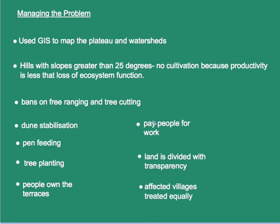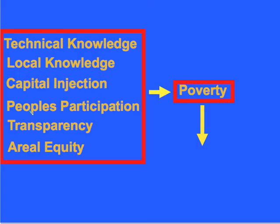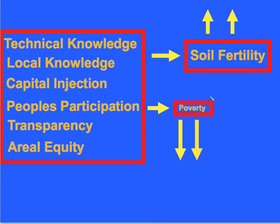Several principles of good environmental management were applied: people's participation, the need for transparency, and equity among all of the villages. There was also the need to have technical knowledge from the outside and to mix this technical know-how with input from the local people. A most significant aspect, however, was the need for an initial injection of capital. With all of these in place, the formula was set to lower the levels of poverty, and along with this lowering of poverty was an increase in soil fertility. This increase in soil fertility only serves to further lessen the extent of people's suffering — another example of positive feedback.